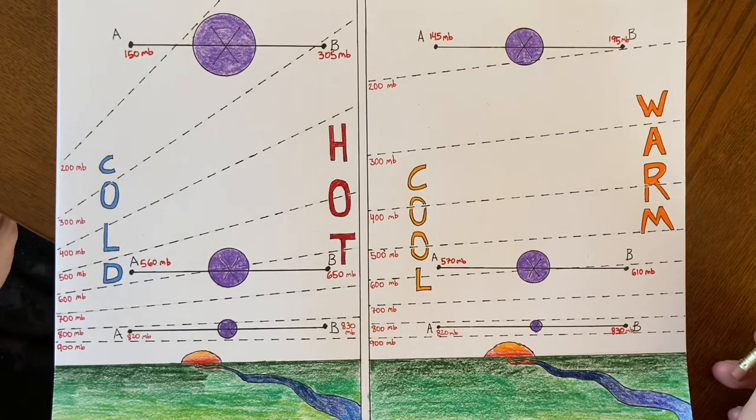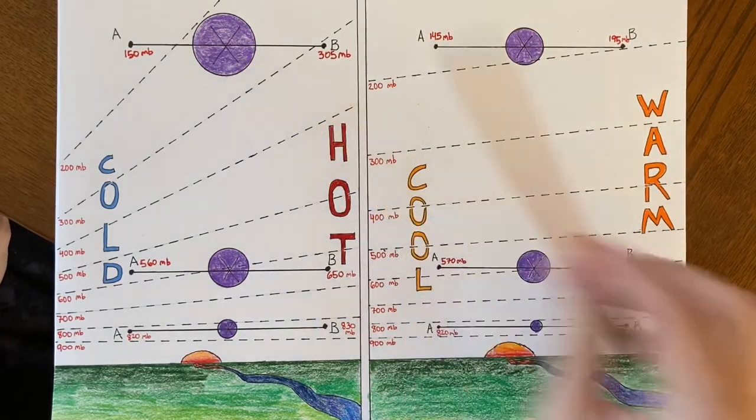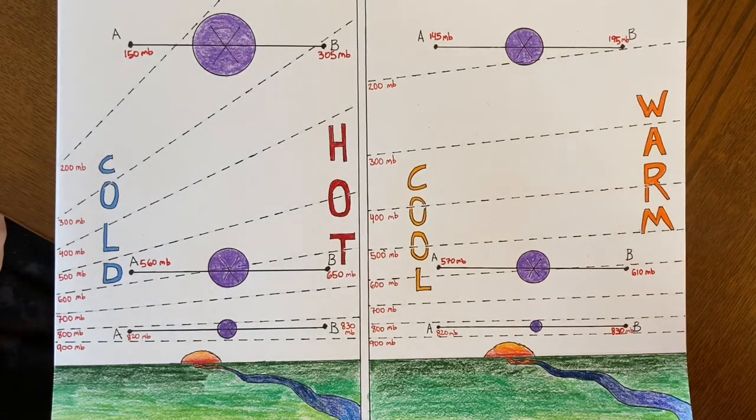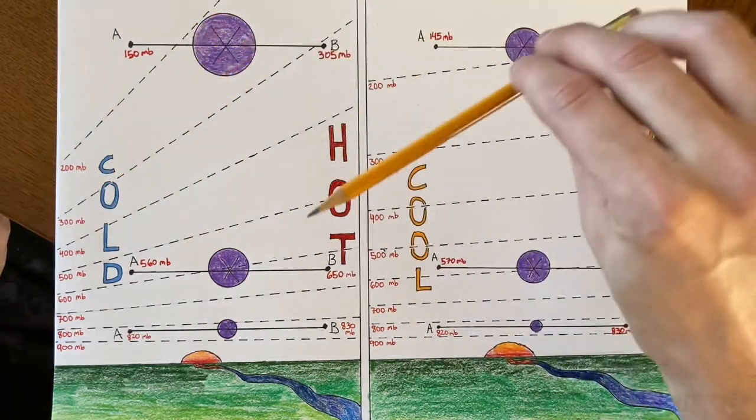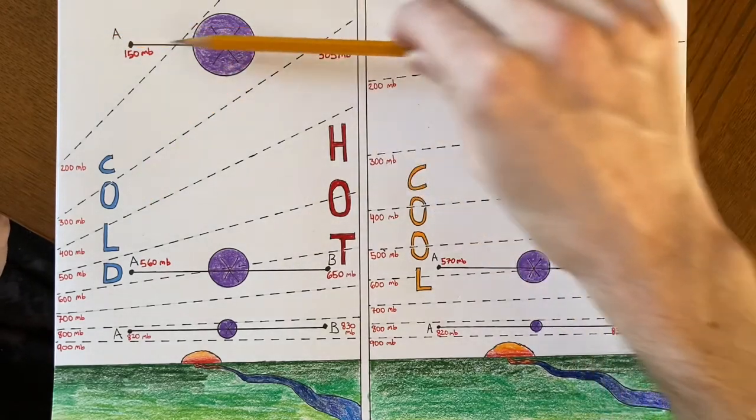So it depends on there being this temperature difference between two air masses. And the strength of that high altitude wind up here is going to depend on how much these pressure lines slope. The more the pressure lines are tilted, the greater the pressure difference between these two points.